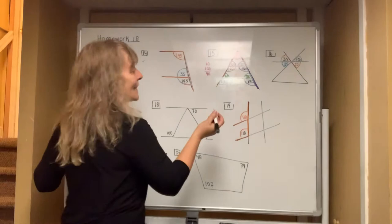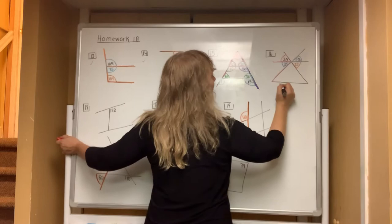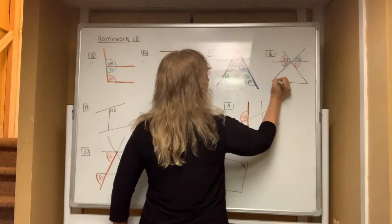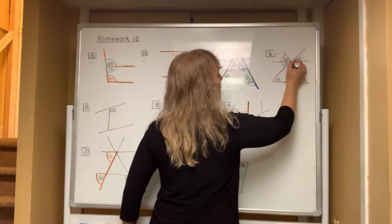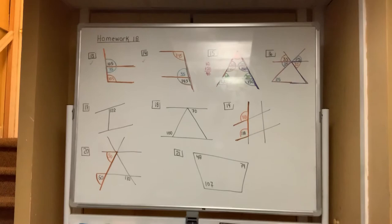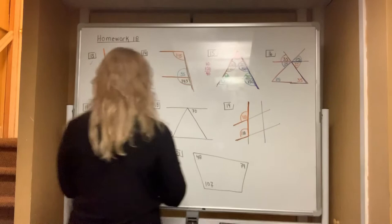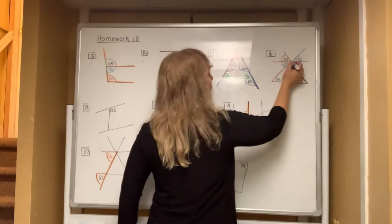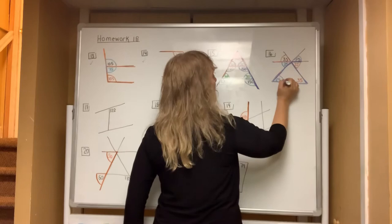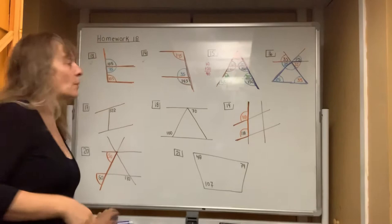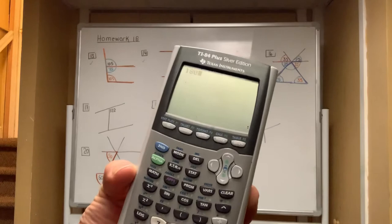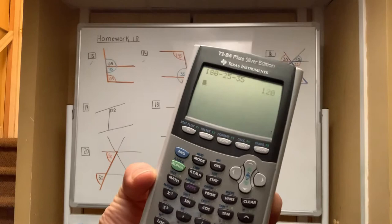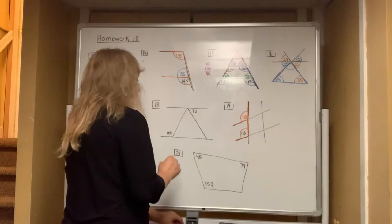Before moving on, look at the diagram and see the letter Z — Z angles are always equal. So the top is 25 and the bottom is 35. In the same diagram, there's a backward Z, so if the top is 35, the bottom is also 35. There's a triangle at the bottom and the three angles always add up to 180. On your calculator, type in 180 and subtract off 25 and 35, leaving you with 120.